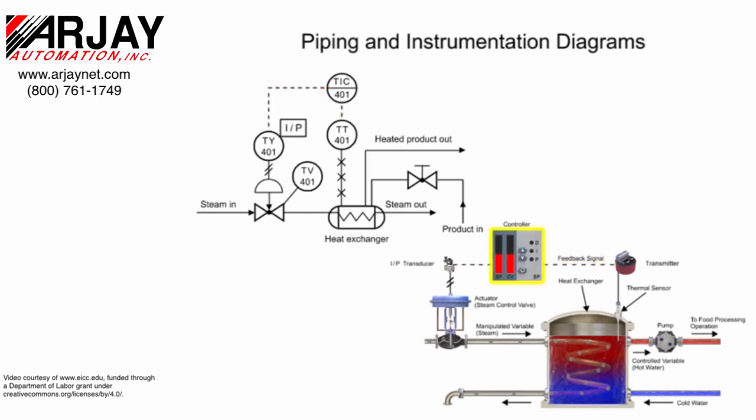The controller and indicator is the instrument where the transmitter sends an electrical signal and is shown in the functional identifier at the second and third letters I and C. Balloons with a solid dividing line indicates that the instrument is board mounted.